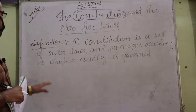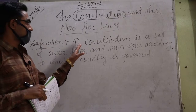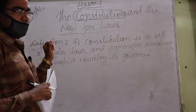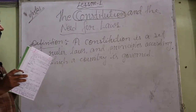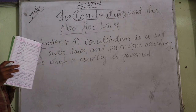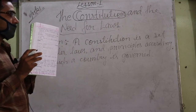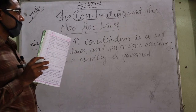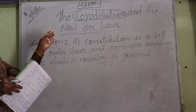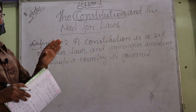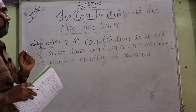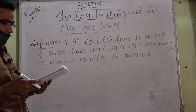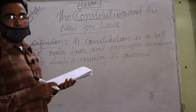So Constitution ka matlab kya hai — a Constitution is a set of rules. Ye ek rules hai, ek niyam hai, ek kanun hai jiske tahat hamara desh chalta hai. Not only our country, but all countries have their own Constitution, their own laws according to which the country is governed. Understood?